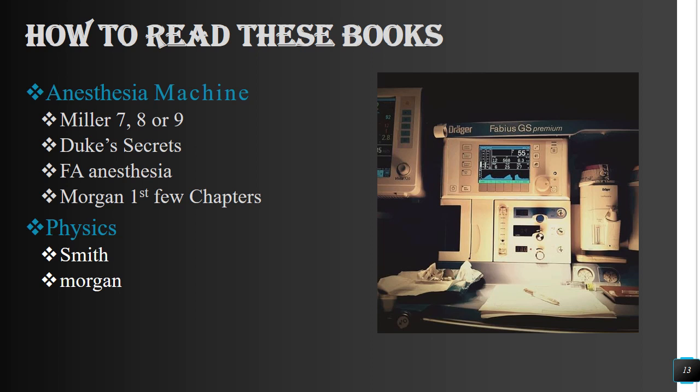For physics, cover the Smith chapters on physics and the Morgan chapter on physics. An important tip: after reading all the textbooks and doing MCQs, go and read the key points at the start of every chapter in Miller as well as Morgan, because many important MCQ points are on those first pages. MCQs do come from those very pages, so don't forget to revise them.